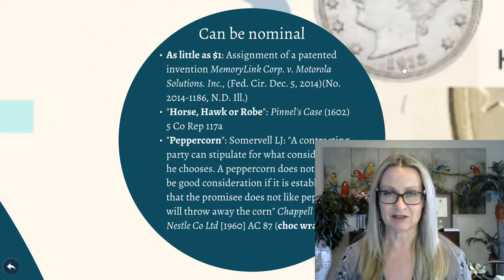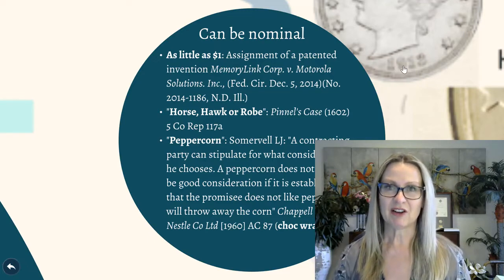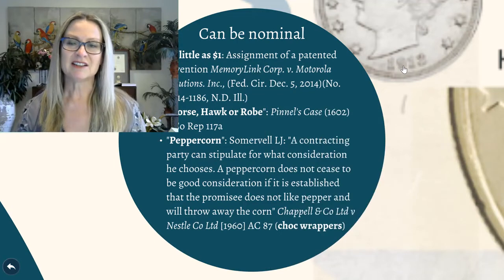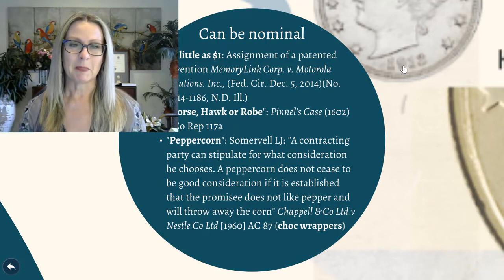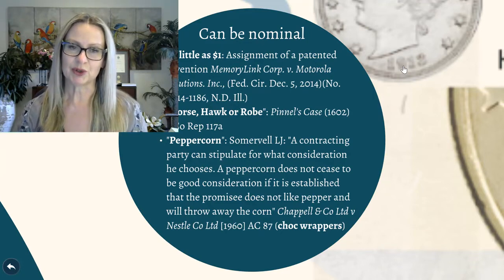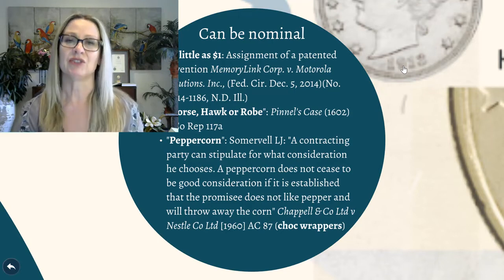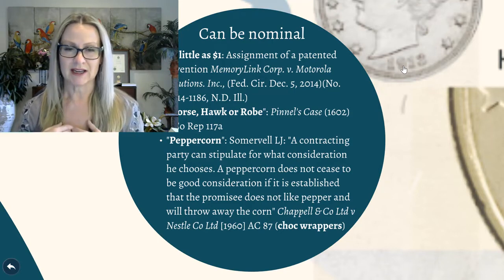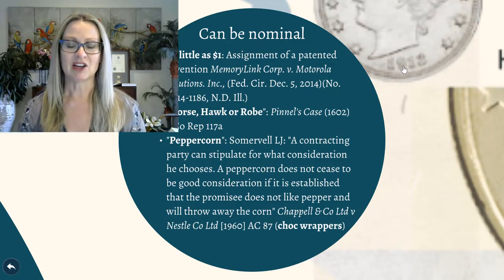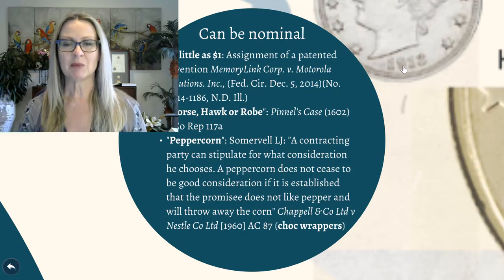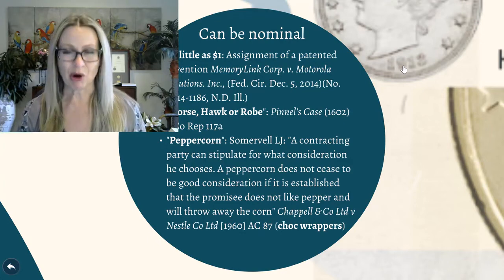In Pennell's case from 1602 — yes, contract law is still relying on cases from the 1600s — it was said that a horse, a hawk, or a robe could be given as consideration. In the Nestle case, chocolate wrappers were considered sufficient consideration. Somerville's extract really spells out the court's complete lack of interest in adequacy: 'A contracting party can stipulate for what consideration he chooses. A peppercorn doesn't cease to be good consideration if it's established the promisee doesn't like pepper and will throw away that peppercorn.'